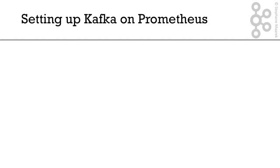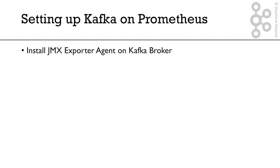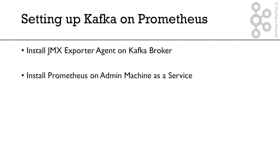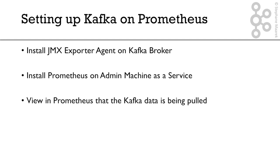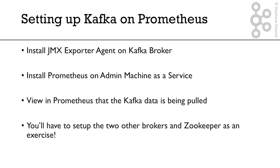We have quite a lot of things to do, so let's get started in setting up Kafka with Prometheus. The first thing we'll do is install the JMX exporter agent on our Kafka brokers. We'll then install Prometheus on the administration machine and set it up as a systemd service. We'll verify that Kafka data is being pulled, and then set up the two other brokers and Zookeeper as an exercise.